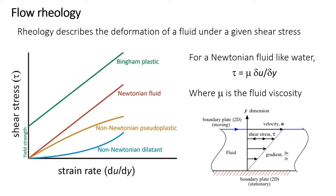Water is a Newtonian fluid because its viscosity is the same at any value of shear stress, and because it starts to flow at the moment shear stress is first applied. This can be shown graphically by plotting shear stress against strain rate, with the slope being the viscosity of the fluid — the red slope here represents a Newtonian fluid.